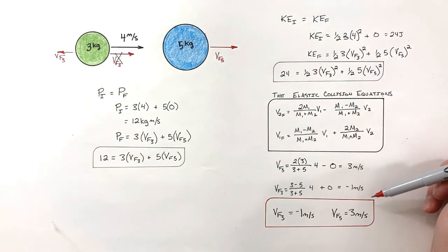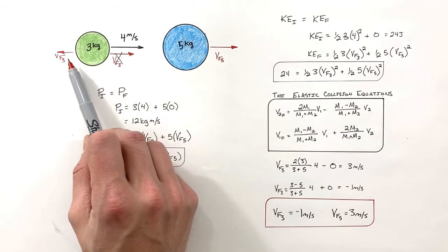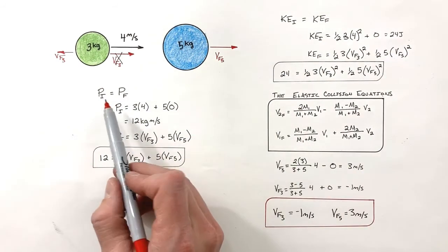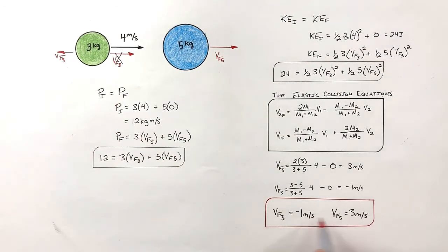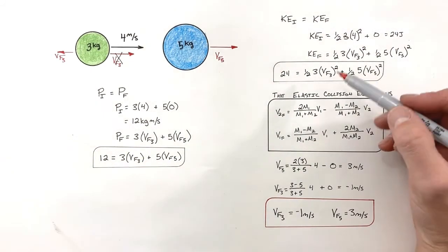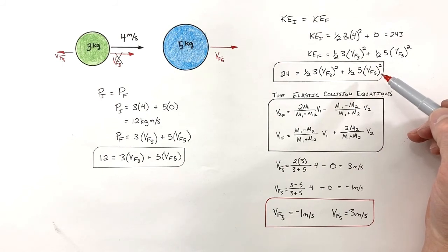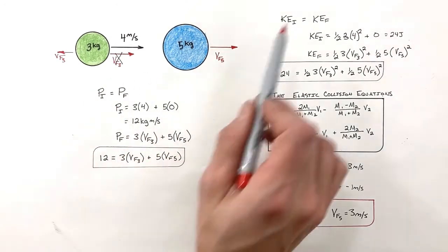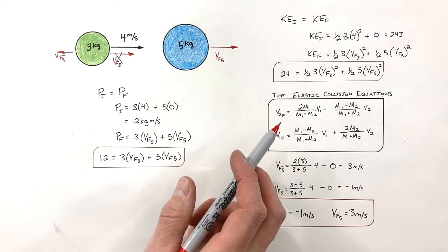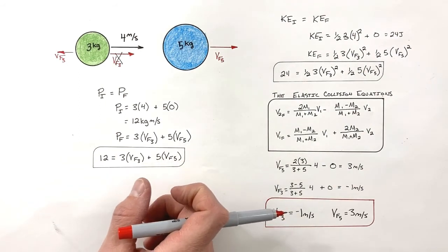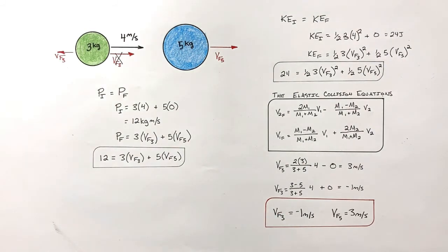So the final result: the three kilogram ball moves to the left at one meter per second, and the five kilogram ball moves to the right at three meters per second. If you go back to check, you'll find that linear momentum was conserved and kinetic energy was conserved. The important takeaway is that in elastic collisions both linear momentum and kinetic energy are conserved, and we have a useful tool — the elastic collision equations — to solve for the final velocity of both objects.